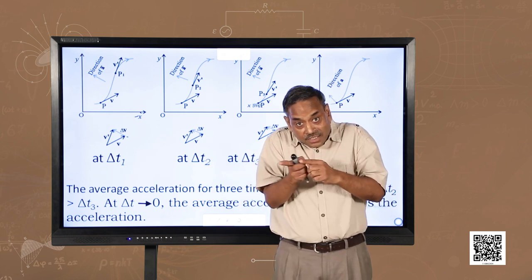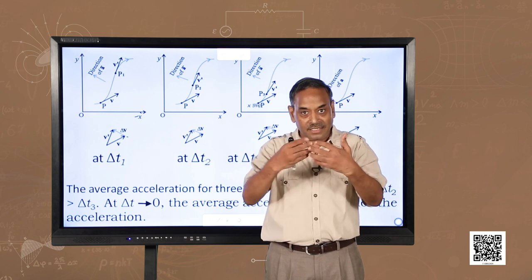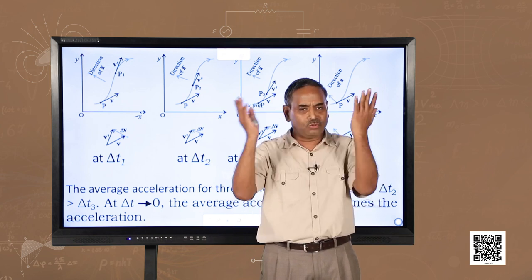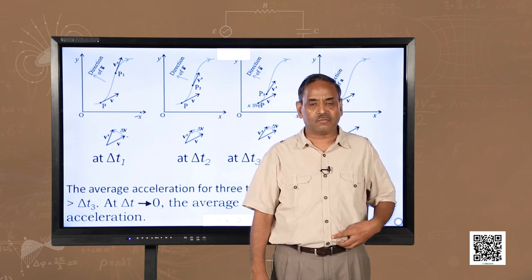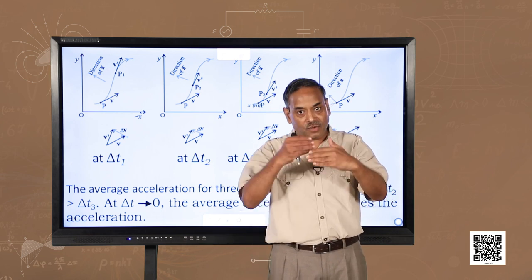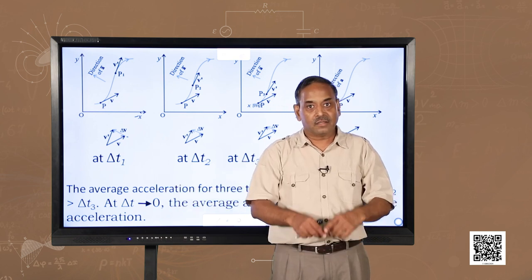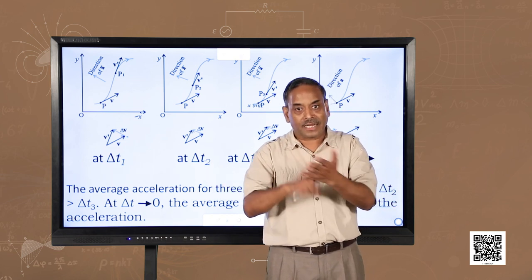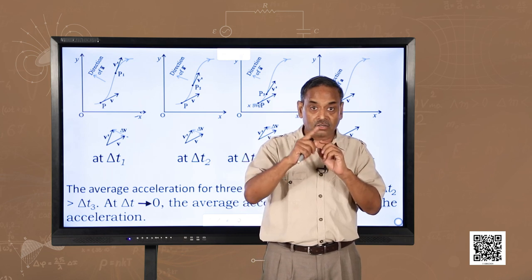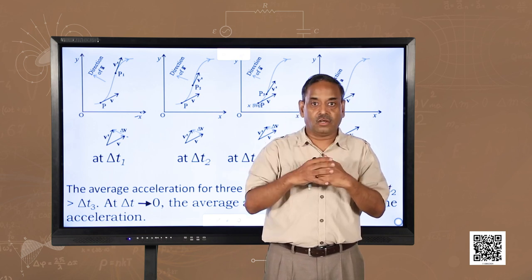So the acceleration is towards the normal, not towards the tangent. The velocity is along the tangent, and the acceleration is along the normal. This beautiful result in motion in a plane — that velocity is tangential and acceleration is normal — gives us the foundation for understanding circular motion, projectile motion, and so on. Earlier, in straight-line motion, velocity, acceleration, and displacement were all in the same direction. But now you have seen that these are different.